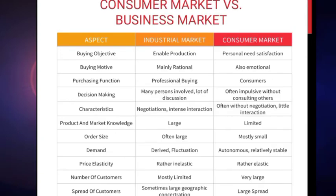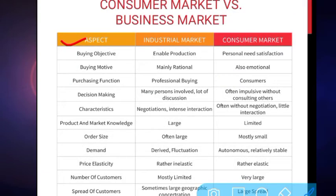Moving further, before starting the process of how an industry conducts its purchase process and what influences its buying behavior, let us first understand how the industrial market and consumer market are different from each other. Here are the aspects on which the difference is drawn between industrial market and consumer market.